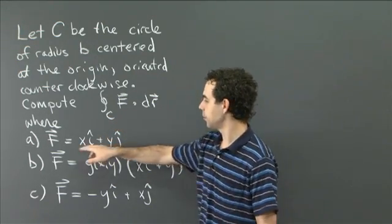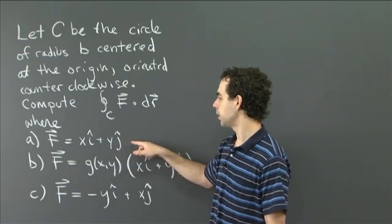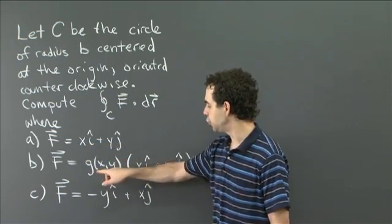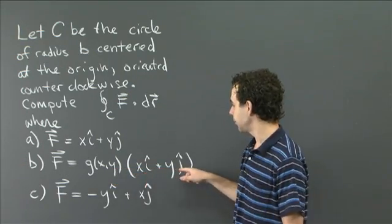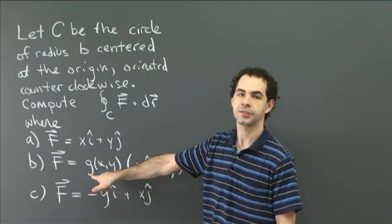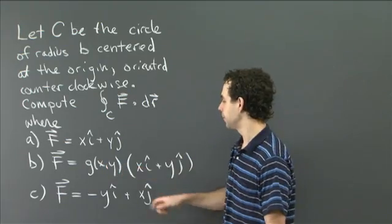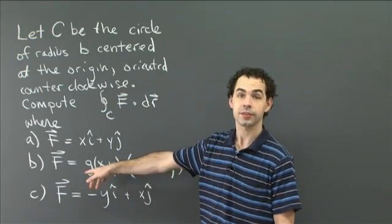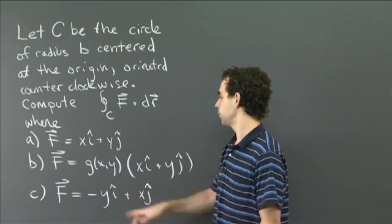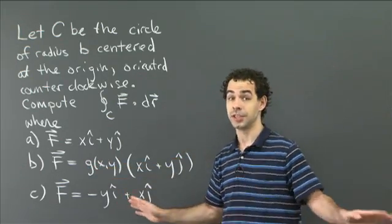In the first case, f is xi plus yj. In the second, f is g(x,y) times xi plus yj. So here, g(x,y) is some scalar function, but you don't know a formula for this function. So your answer might be in terms of g, for example.